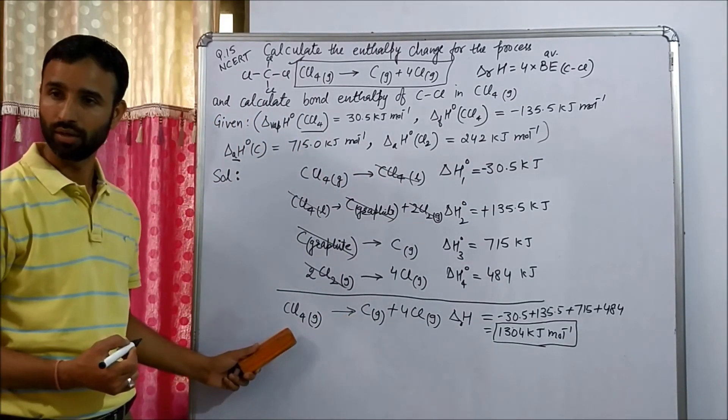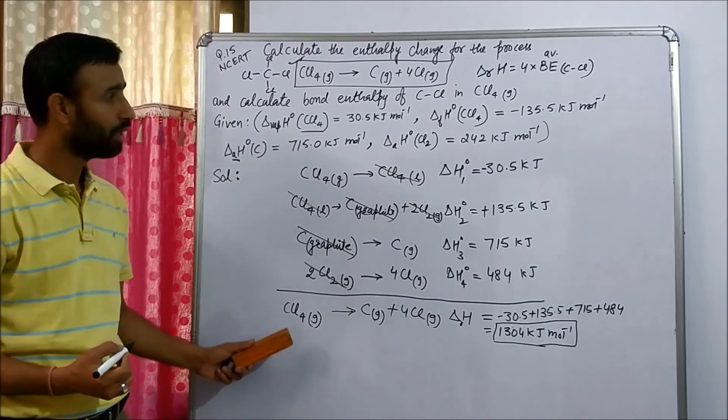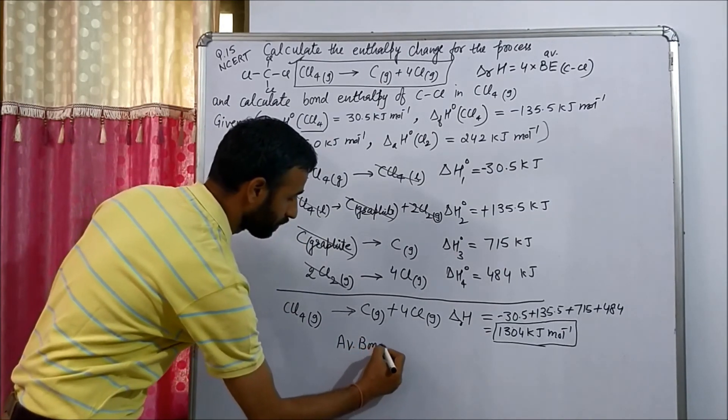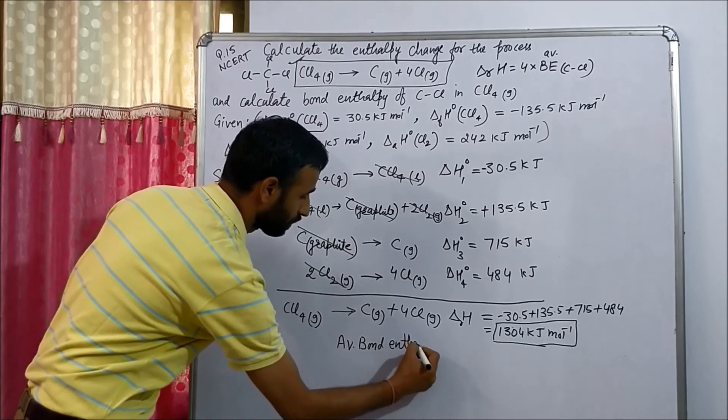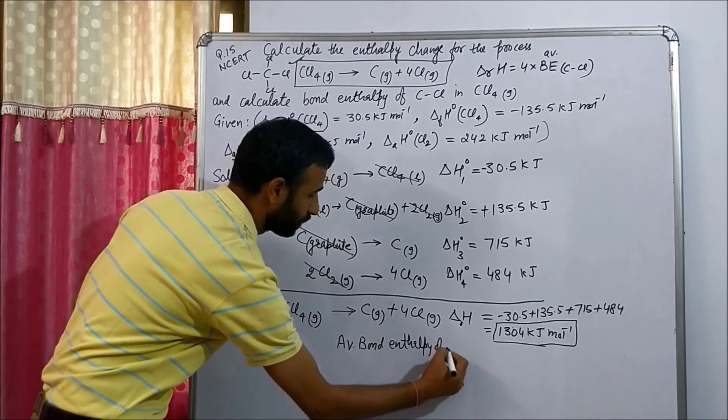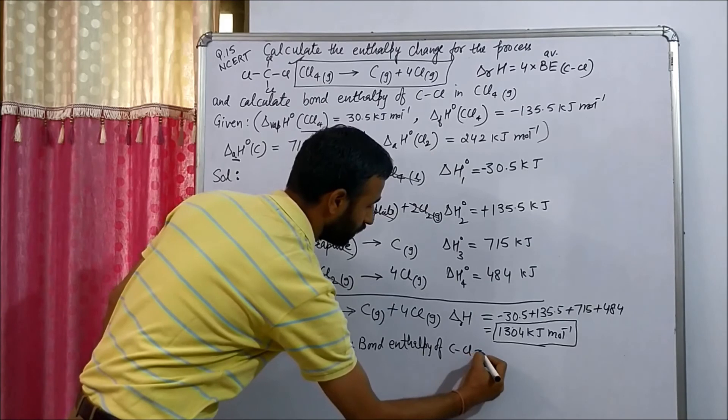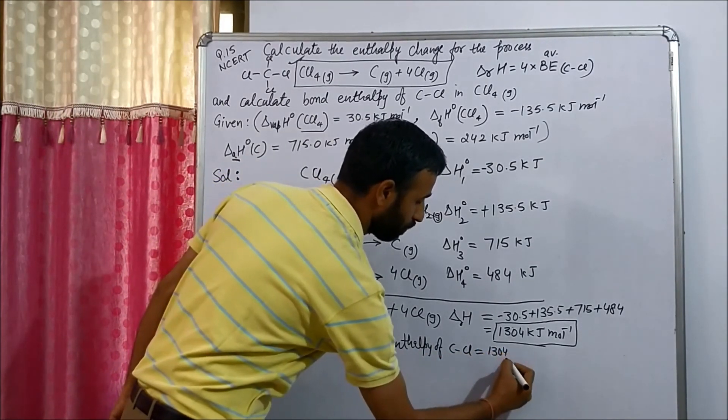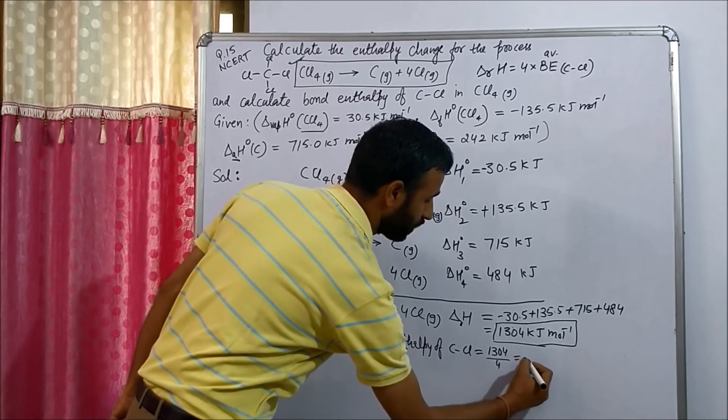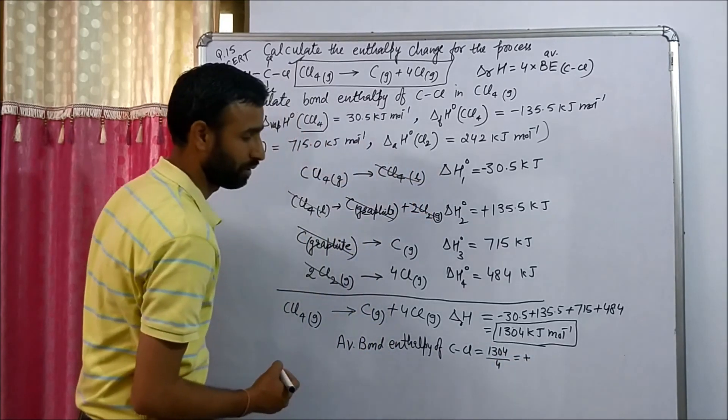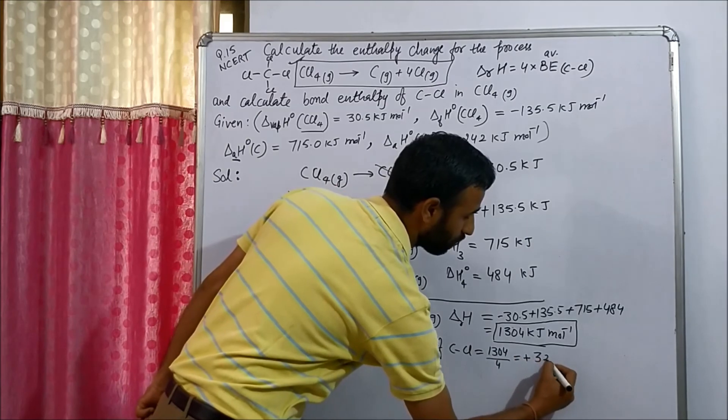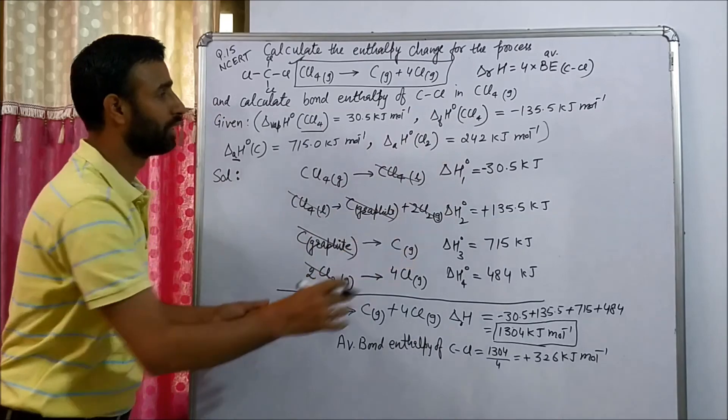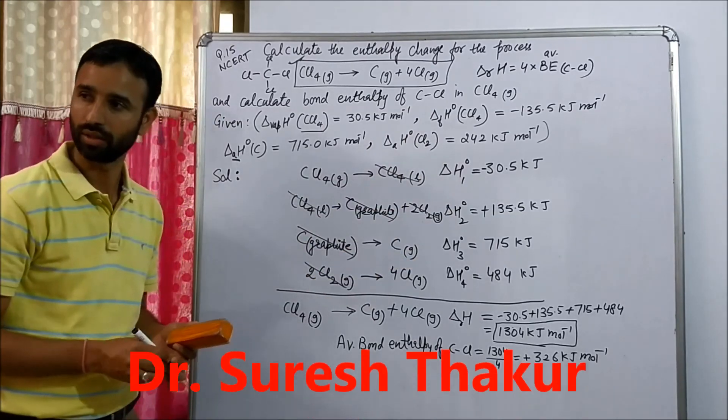And this is the energy required to break four C-Cl bonds. So average enthalpy of C-Cl bond is equal to 1304 divided by four, which is 326 kilojoules per mole. So in this way we solve this equation.